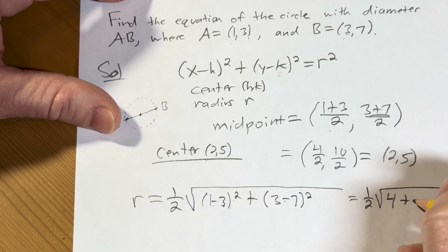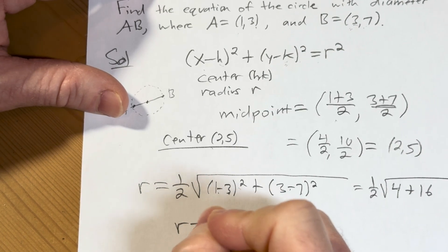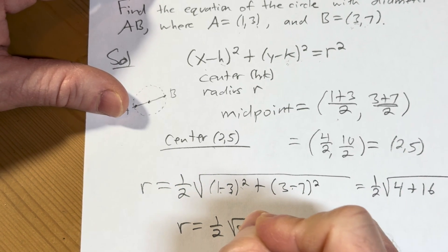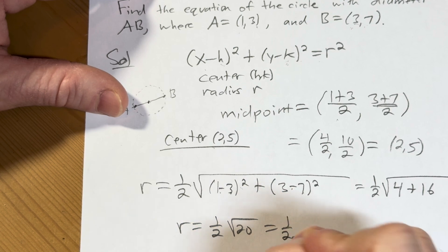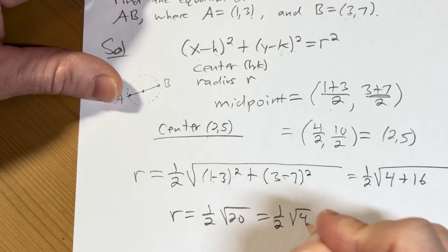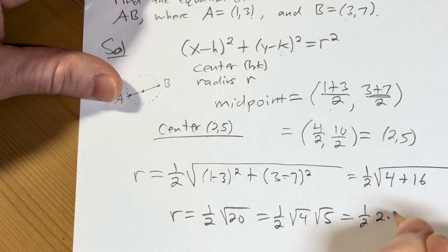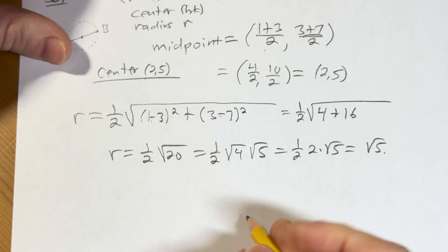3 minus 7 is negative 4, square that, you get 16. So r is equal to 1/2 the square root of 20, which is 1/2. The square root of 20 is the square root of 4 times the square root of 5. The square root of 4 is 2, so r is going to be equal to the square root of 5.